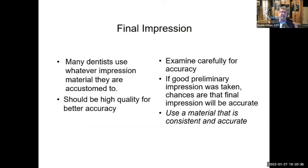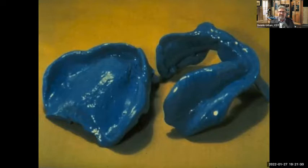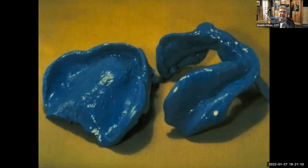For the final impression, use a quality material and examine it for accuracy before it leaves the dental office — this way you don't lose time or inconvenience the patient with a second impression. Here are a couple of impressions with nice, accurate PVS material. The borders aren't overly thick here — the doctor border molded slightly as the patient felt comfortable with their previous denture. We captured all the landmarks needed.